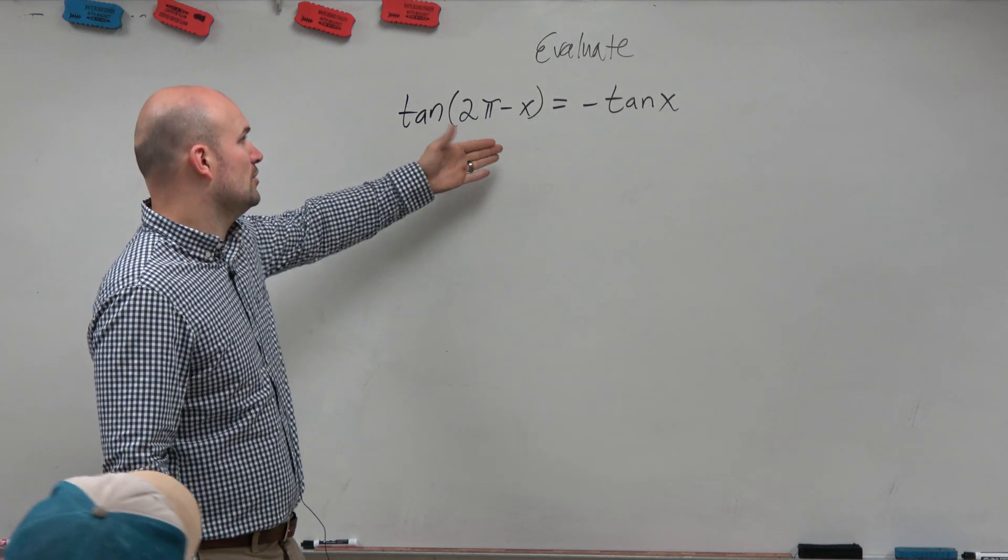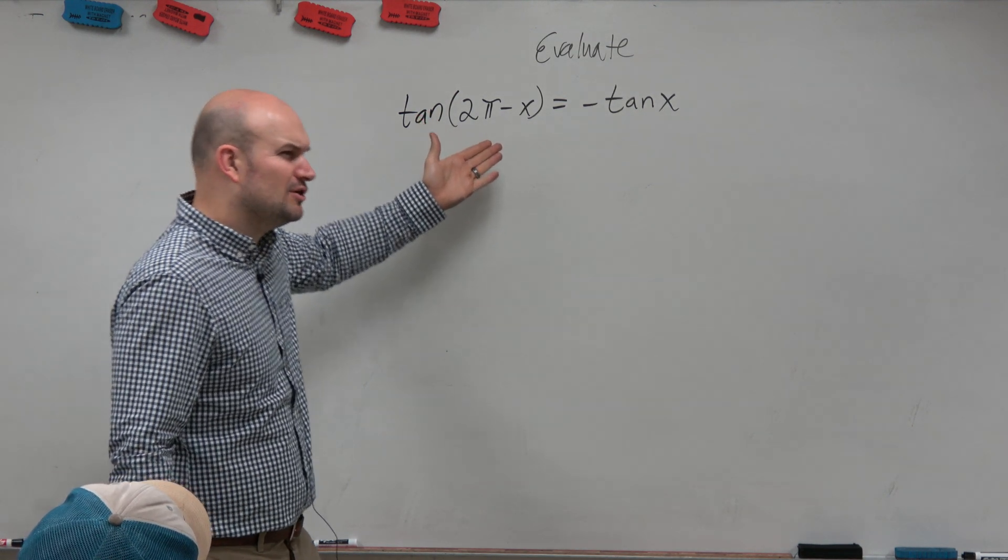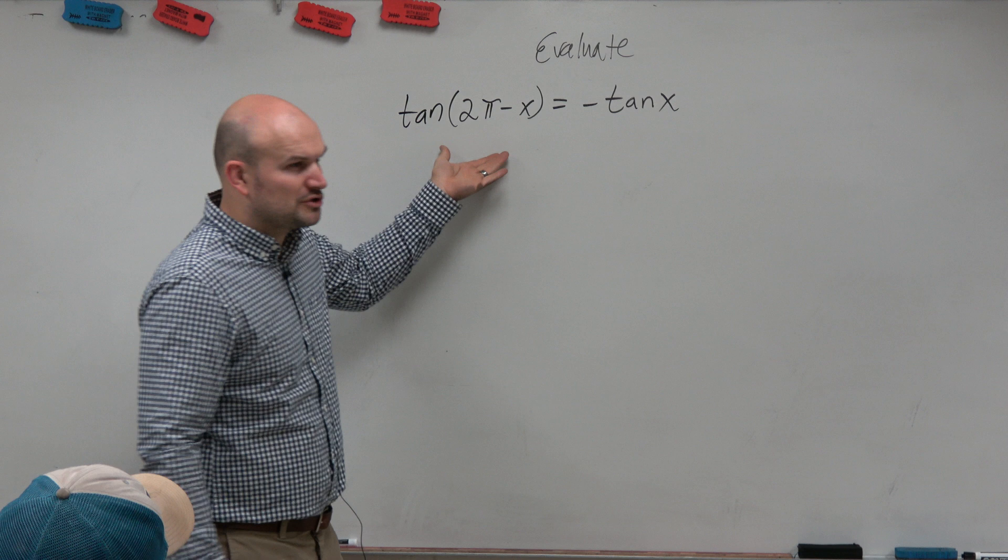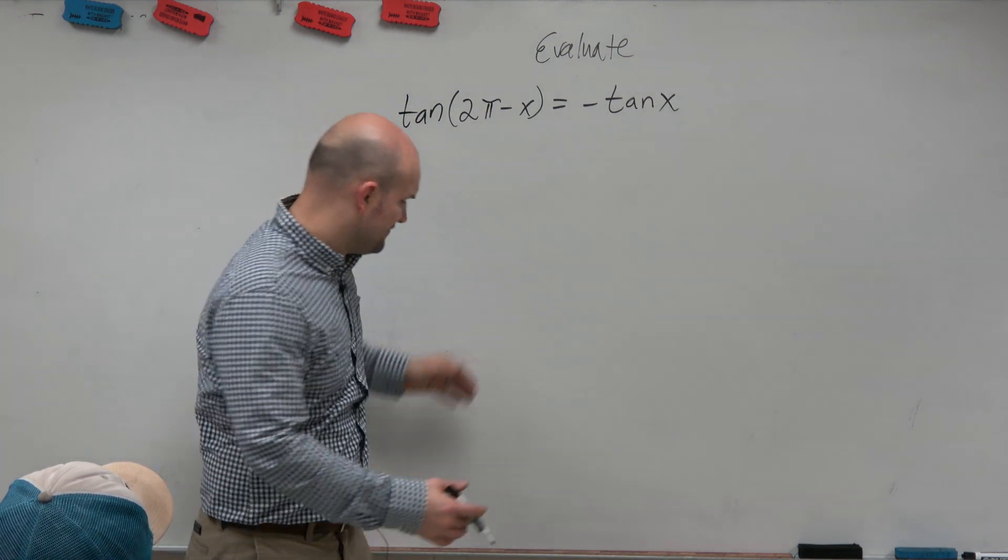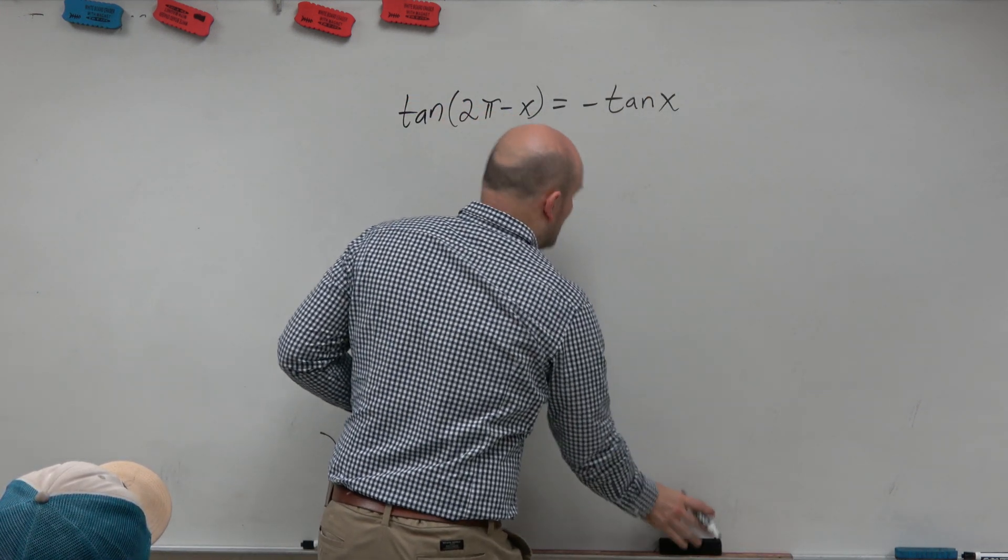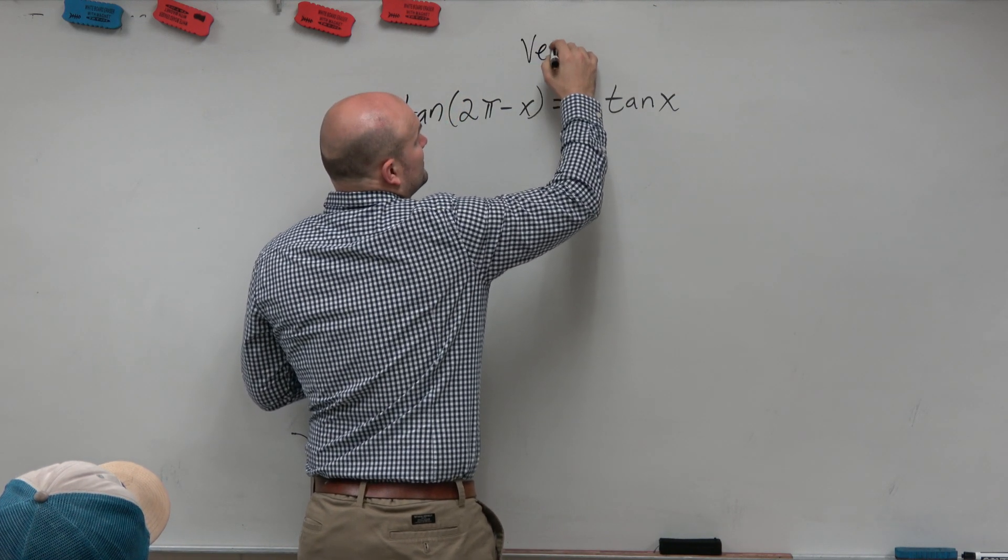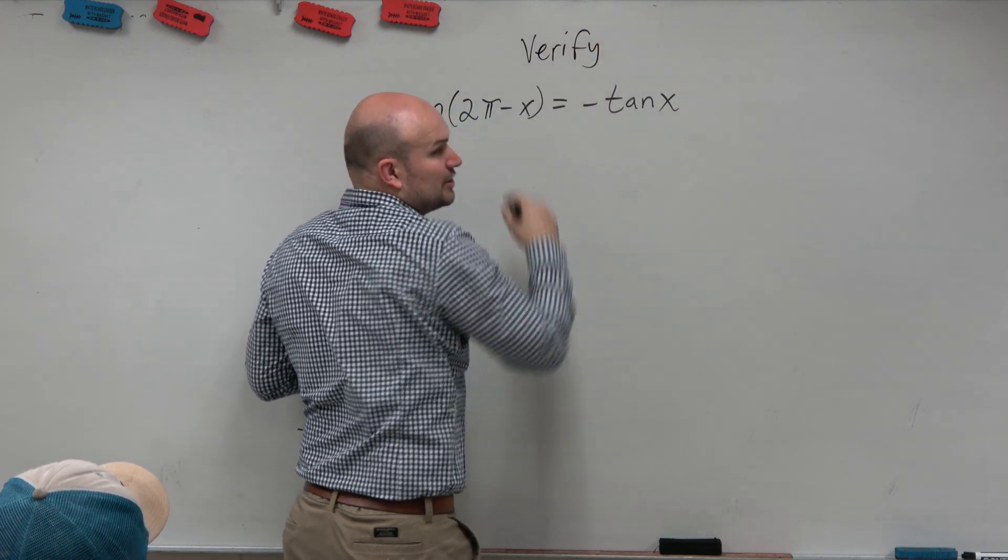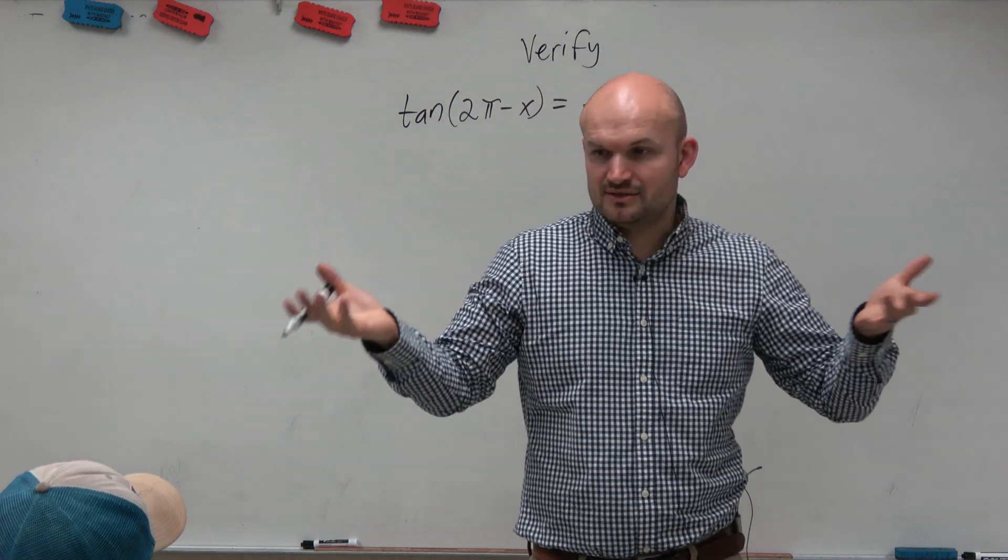So we can't just say it's equal to. But again, if we use the co-function identity, then this would be equal to cotangent anyways, which would not verify this, which I don't know why I left to evaluate on. Our problem here is to verify, like question number two on your quiz. Make one side, make the left side look like the right side.